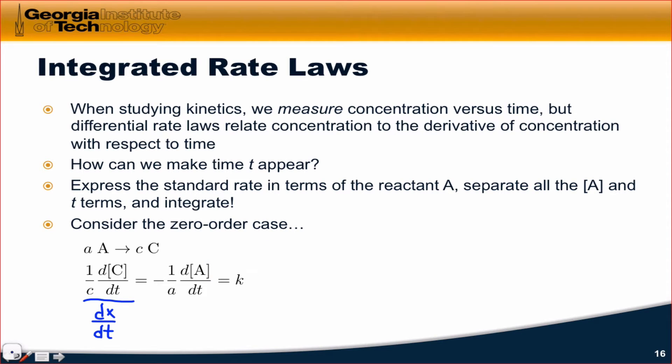In this case, the rate law reduces to the standard rate, negative 1 over A dA dt is equal to k A to the zero power, which is always equal to 1 no matter the value of A, and so that's simply equal to a constant k. We can move t to the other side by multiplying both sides by dt, and we get d molarity of A is equal to negative A times k dt. We've also multiplied both sides by negative A to achieve this.